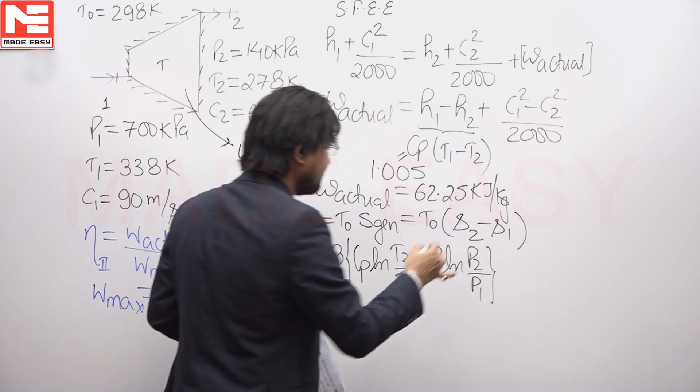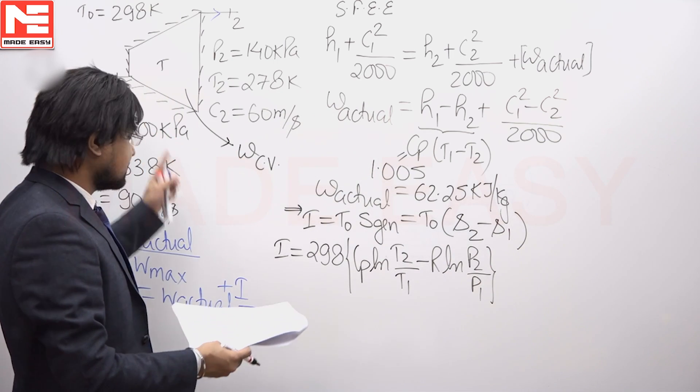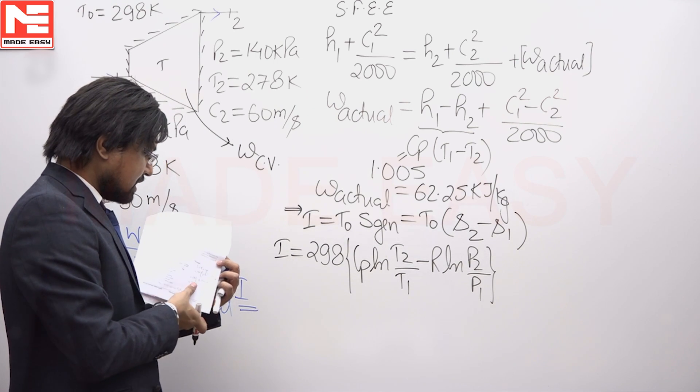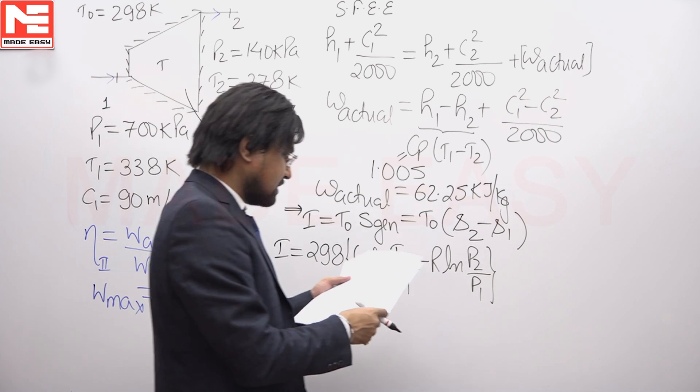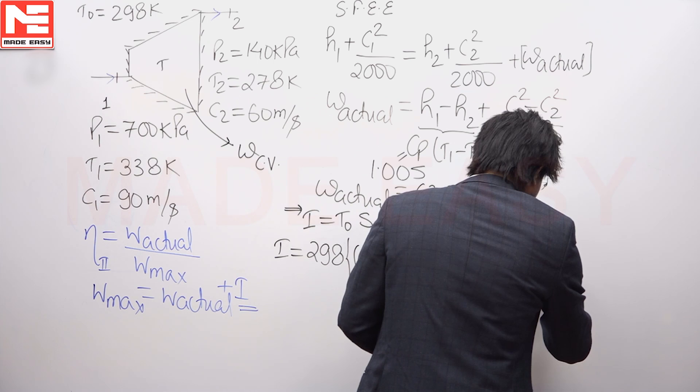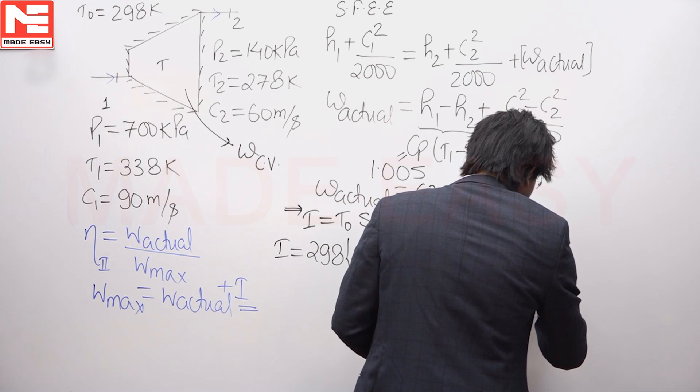The pressures have been given to us, the temperatures have been given to us. I will write the value of irreversibility, and irreversibility will be found out to be 79.12 kilojoule per kg.